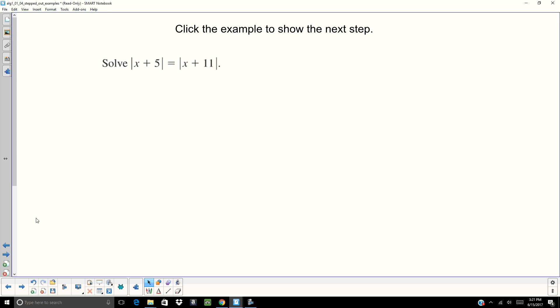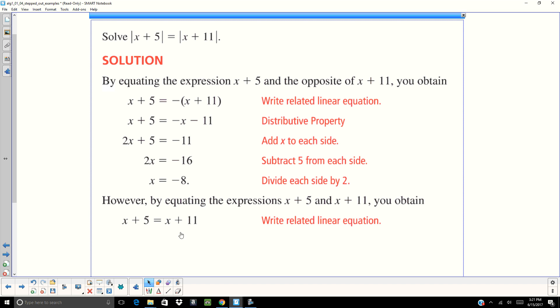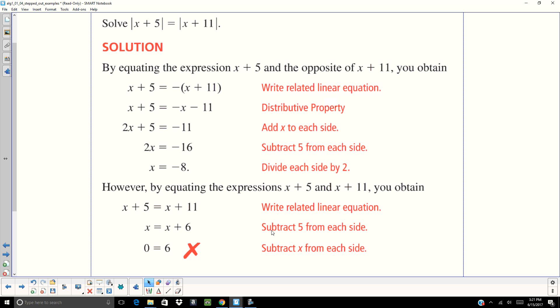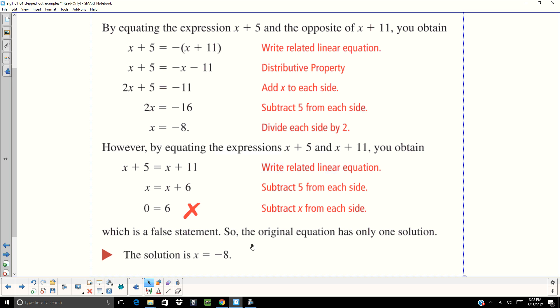All right, take a second. Pause the computer. Try this one on your own. On this one, you're going to get X plus 5 equals negative parentheses X plus 11. That's your negative scenario. You go through and solve it by adding X on both sides, then subtracting 5, and you get X equals negative 8. Then we're going to do the positive scenario, and you get X plus 5 equals X plus 11. Your X's cancel out, and you get 0 equals 6, which is never going to be true. So that one does not work out. So only one solution, X equals negative 8.